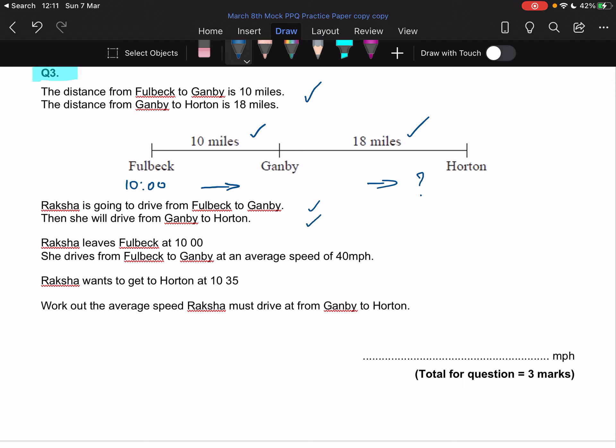The first thing I can work out is this bit here. She leaves Fulbeck at 10:00 and drives from Fulbeck to Gamby at 40 miles per hour. This is obviously a speed, distance, time question, so I'm drawing my triangle.